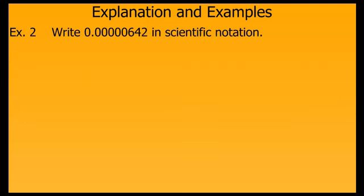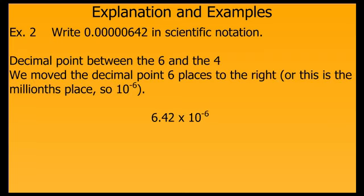Here is another example, this one a very, very small number. This time, we place the decimal point between the 6 and the 4 to get 6.42, a number that is between 1 and 10. In order to do that, however, we have to move the decimal 6 places to the right, so our exponent is negative 6 because we are dividing by a power of 10. Or, we can think of the 10 being in the millionths place, so 10 to the negative 6 power. Therefore, in scientific notation, 6.42 times 10 to the negative 6 is equivalent to 0.0000642.